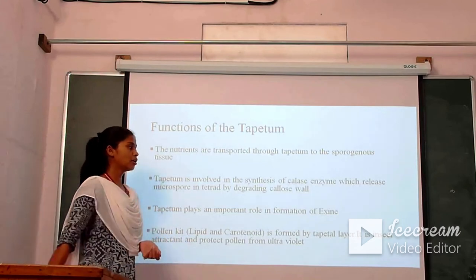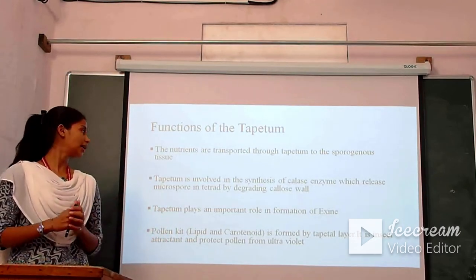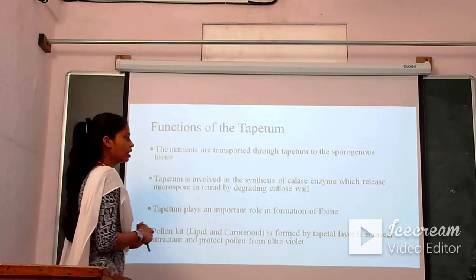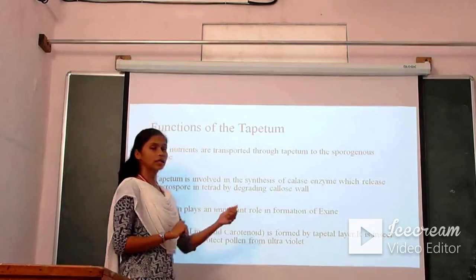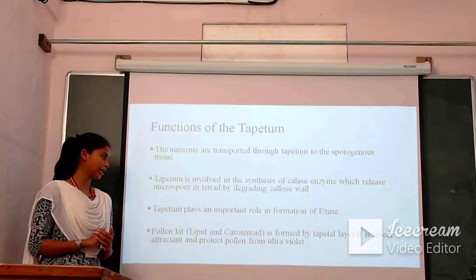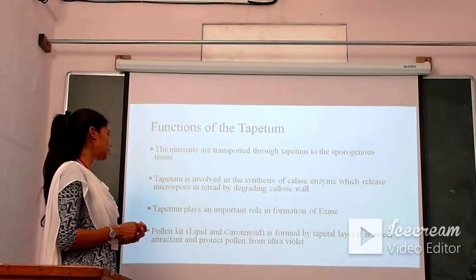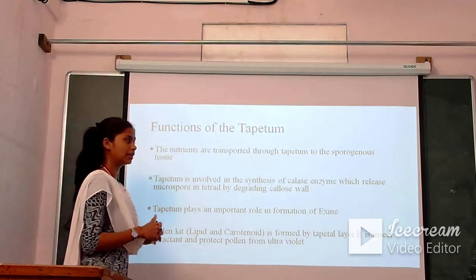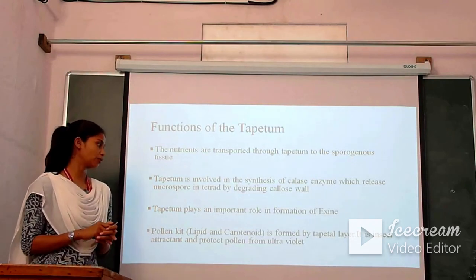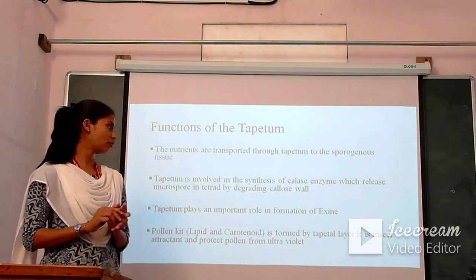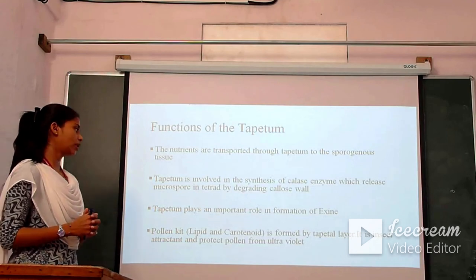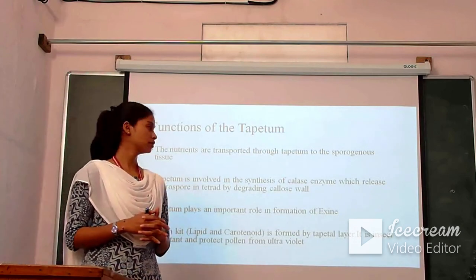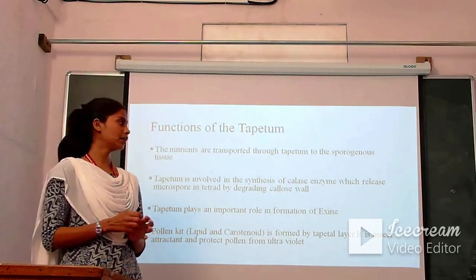Tapetum also plays an important role in the formation of exine, as tapetum releases sporopollenin which is the necessary material for exine formation. Next, pollen kit: it is basically an oily compound made up of lipids and carotenoids, formed by the tapetum. It is insect-attractive and coats the pollen, protecting pollen grains from ultraviolet rays. So pollen kit is an oily compound mostly present on the anther that attracts insects and protects pollen grains from ultraviolet rays.